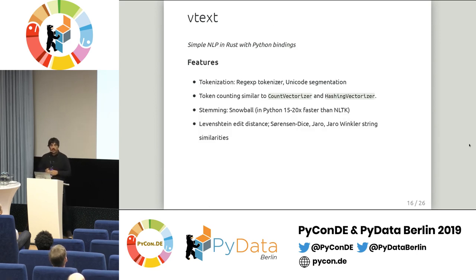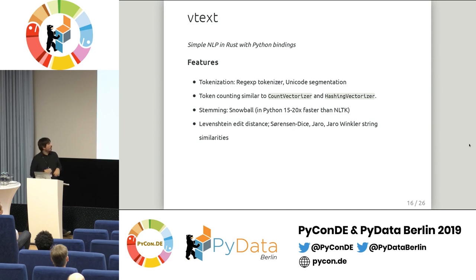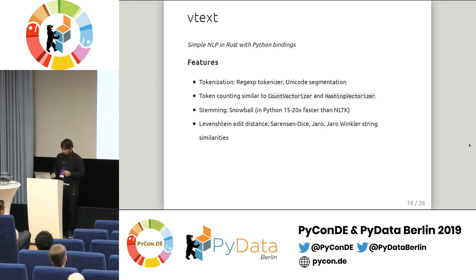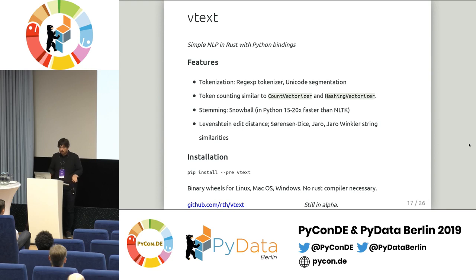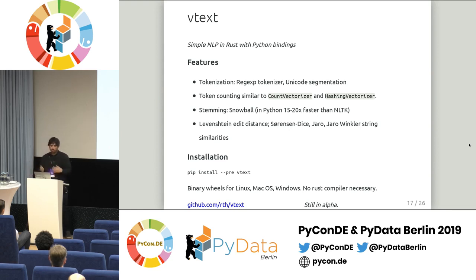To summarize: vtext is a package for simple NLP in Rust with Python bindings. Features include tokenization, token counting, stemming, and string edit distances. You can install it with pip — there are binary wheels for different platforms, so you won't even know it's written in Rust. It's still in alpha, so the API may change, but it's an experiment in how you can write Python bindings for Rust.